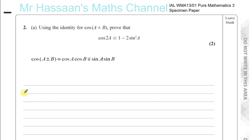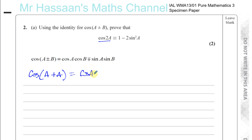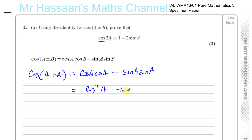We have cosine of 2A, so what we're going to do is say cosine of A plus A — that gives you cosine 2A. Cosine 2A is the same as cosine of A plus A. Using the addition formula, that's cosine A times cosine A, and since there's a plus here, this will be minus, so we subtract sine A times sine A. That gives you cosine squared A minus sine squared A.